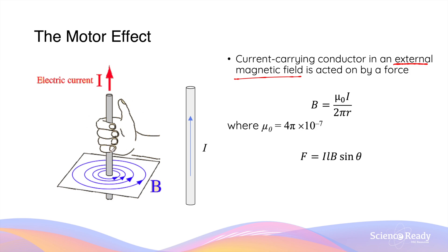We can use our right-hand grip rule to determine the direction of this radial magnetic field. When another current-carrying straight conductor is placed within this magnetic field produced by the first conductor, it will be acted upon by an electromagnetic force.